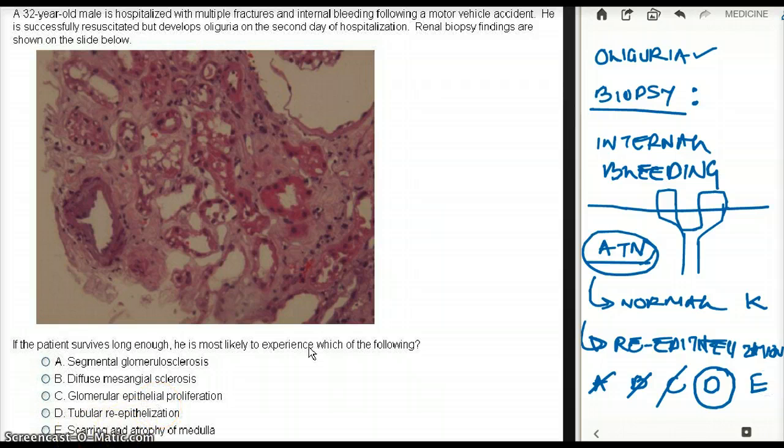And choice E says, scarring and atrophy of the medulla. I mean, that's convincing. But if he survives, he's probably going to have tubular epithelialization, then scarring. So my desired answer in this case is going to be D.